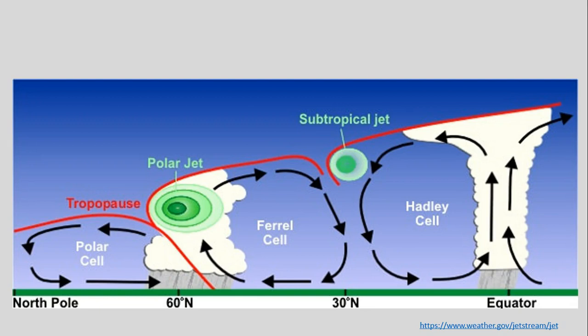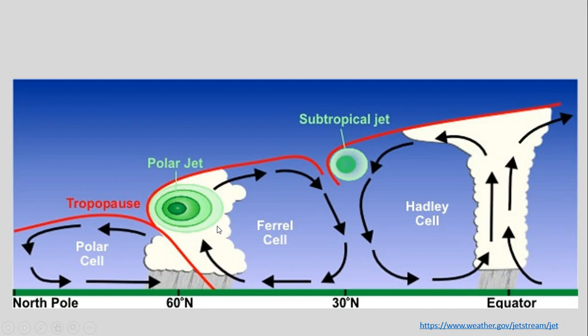We've seen this image before showing our side view of these different cells: our Hadley cells in the tropics, Ferrel cells or mid-latitude cells, and our polar cells. We want to note our jet streams, both our polar jet stream and subtropical jet stream. This video is mainly focused on the polar jet stream because it's an important arbiter of weather within the mid-latitudes.